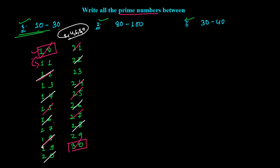For 7: 7×1=7, 7×2=14, 7×3=21, 7×4=28 — these are canceled. Now go for 11: leave 11 itself, and the next multiple is 22 which is already canceled. Then choose 13, leaving it, and cancel multiples of 13 — 26 is already canceled.